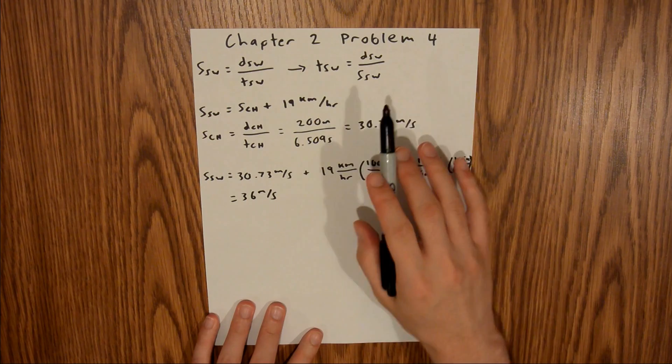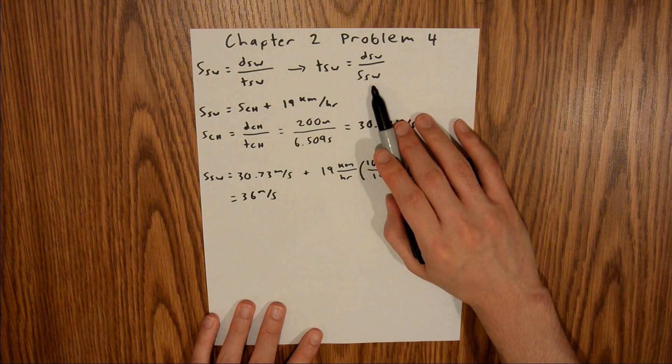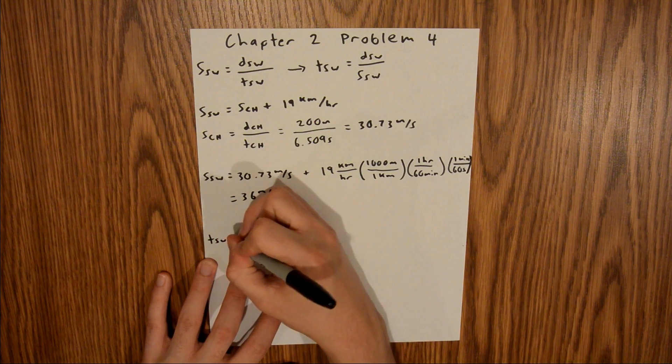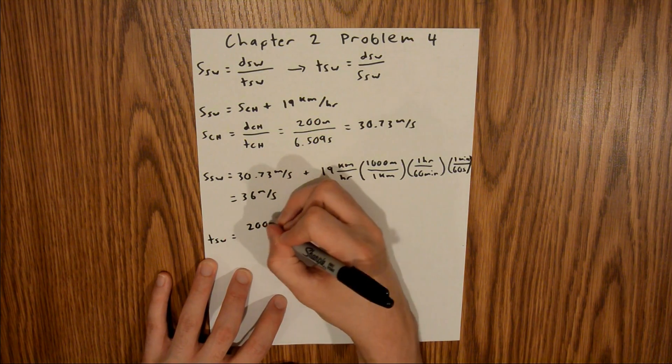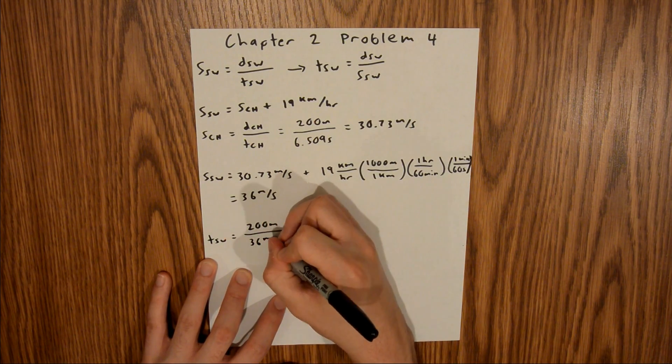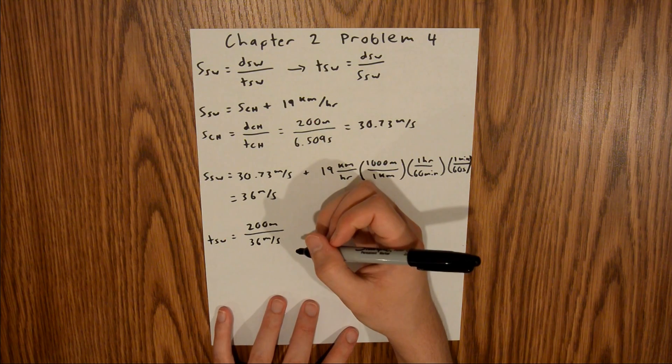Now we have the speed of SW, which we can plug into this equation to find our time. T SW is equal to 200 meters divided by 36 meters per second. And if you plug that into your calculator,